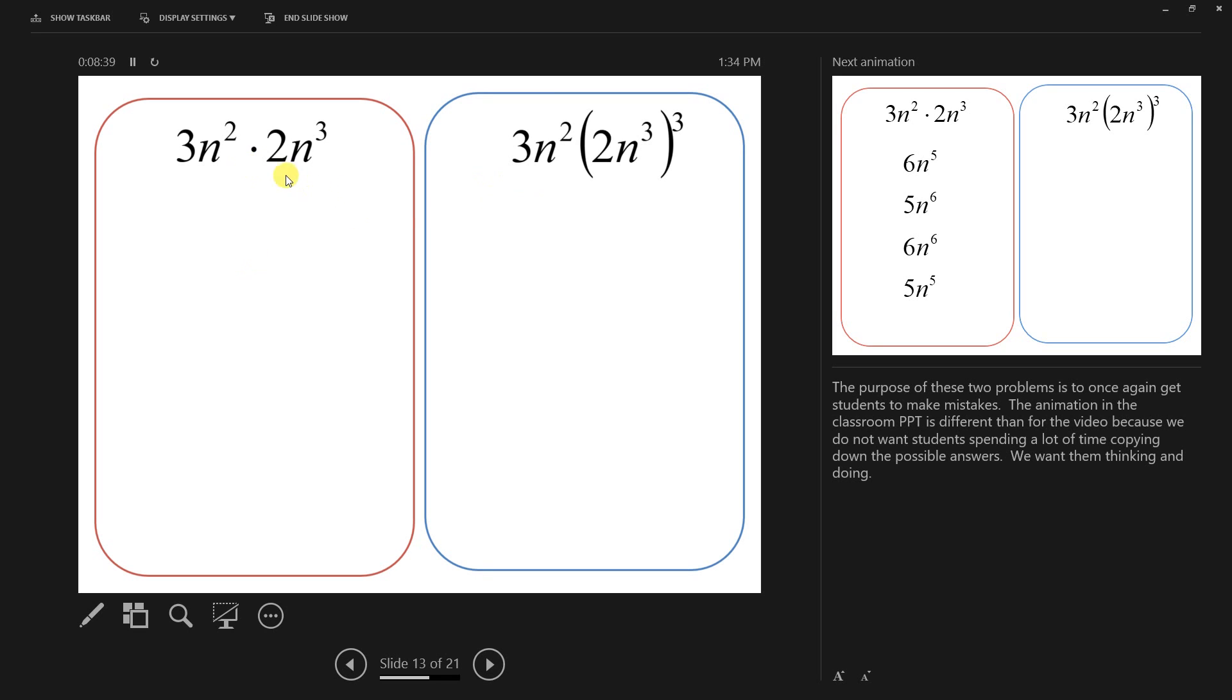I would have them try both of these problems. You could do them together in a group. And then more than likely, there's one of these is correct. It's of course the first one. I wouldn't show them that at first. But I would do a poll and see who has this and who has this and who has this.